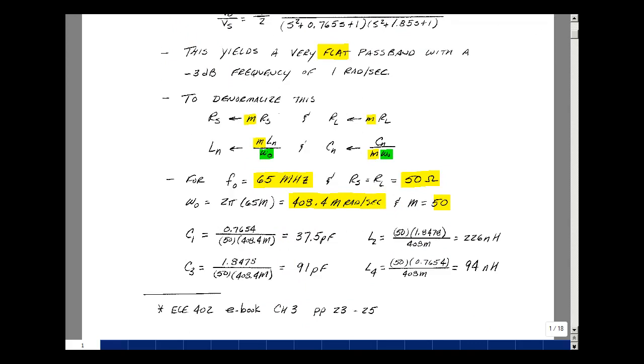To denormalize, we're going to multiply every resistor by a factor of m, and likewise for every impedance. So we're going to multiply the inductance by m, and we're going to divide the capacitance by m, because the impedance is 1 over sC.